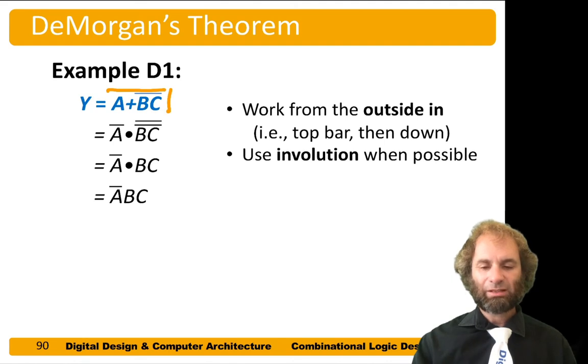I can apply De Morgan's law. I have something or something bar gives me A bar and BC bar bar. Now I have a double bar, so by involution, two wrongs make a right.